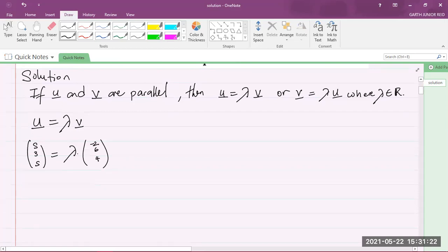I'm just going to perform a scalar multiplication here. Remember, lambda is a constant, it's a scalar. So I can multiply the lambda by each element inside the vector here. So I can say S, 3, S is equal to negative 2 times lambda, 6 times lambda, and 4 times lambda.